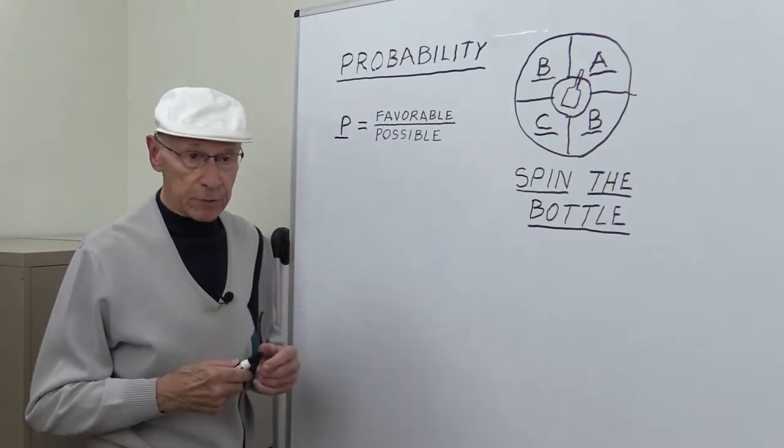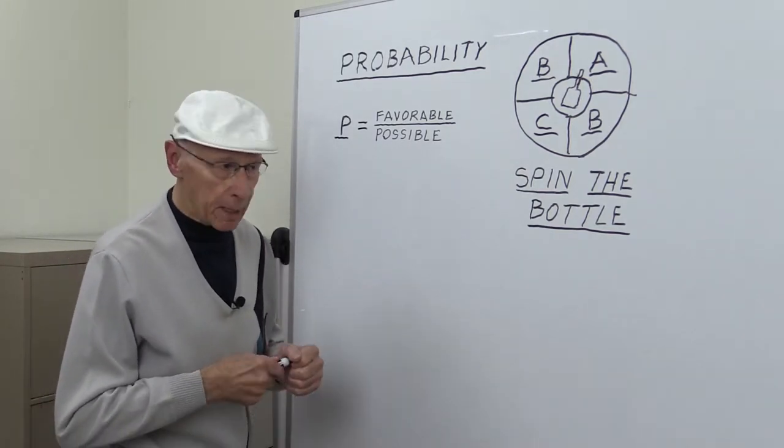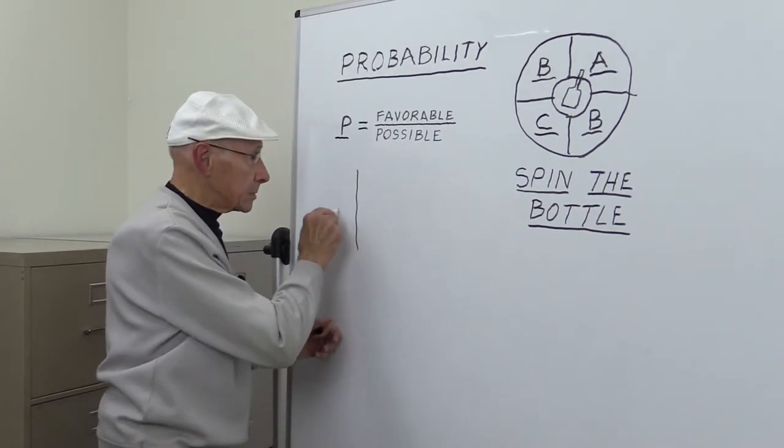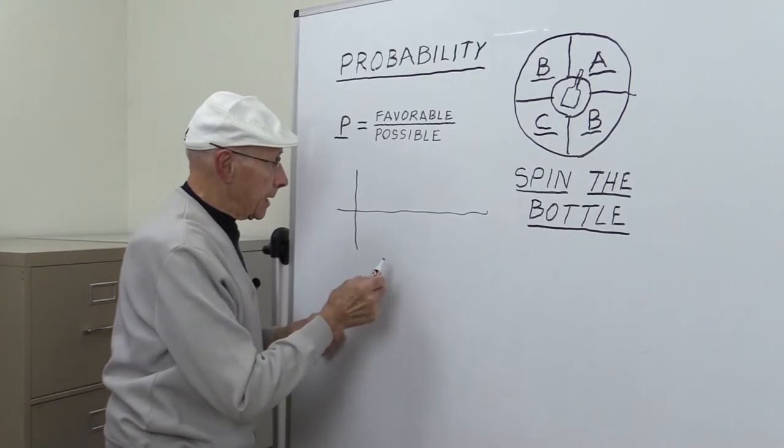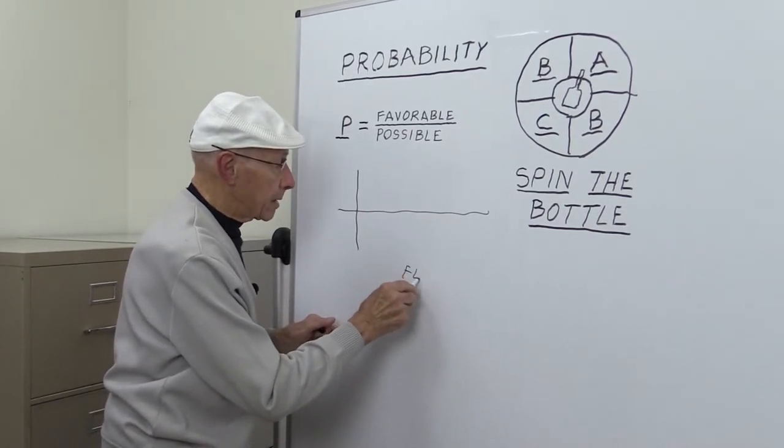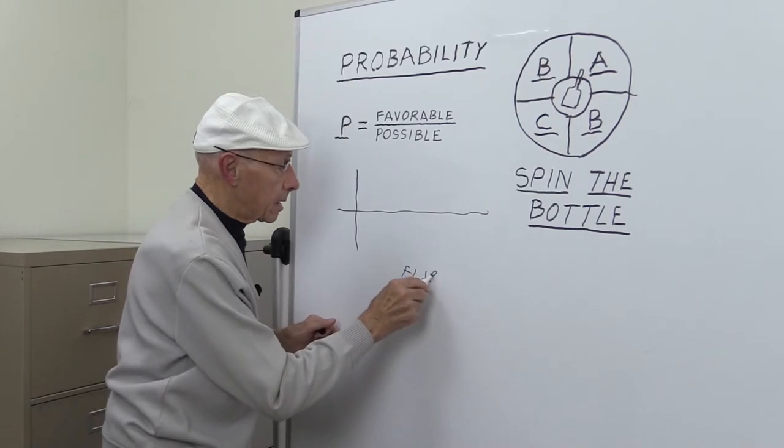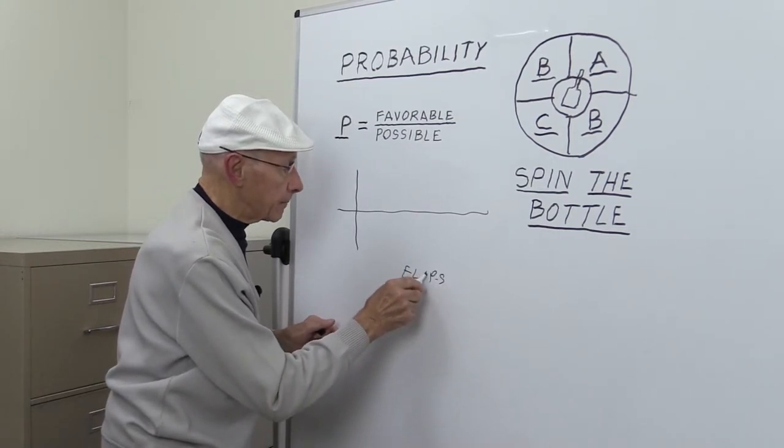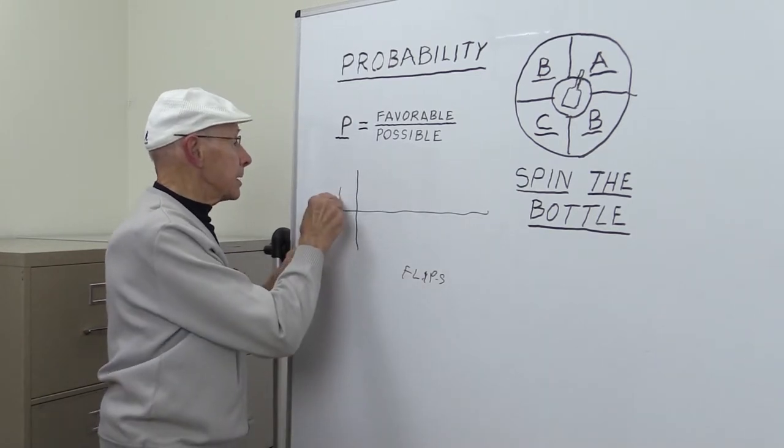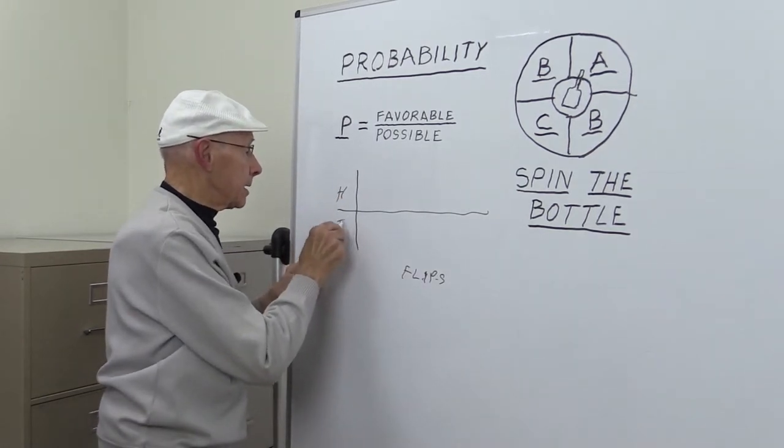But here's a way to look at that. If you look at that statistically, let's graph this. And this is flips, I'll say, flips of the coin. Okay, so this is, say, heads, tails.